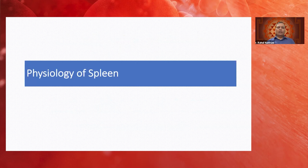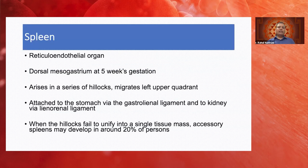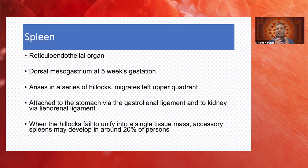First, we'll talk about the physiology of the spleen. The spleen is a reticuloendothelial organ. In its embryonic phase, it arrives at the dorsal mesogastrium at the fifth week of gestation. It arises in a series of nodules which migrate left towards the left upper quadrant, which is the final position in an adult. It is attached to the stomach via the gastro-splenic ligament and to the kidney via the lieno-renal ligament. When these small nodules fail to unify to form a single tissue mass, accessory spleens can develop.